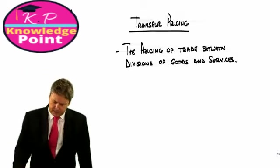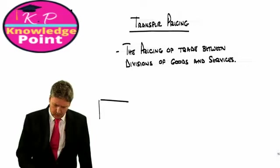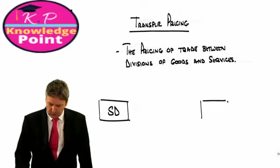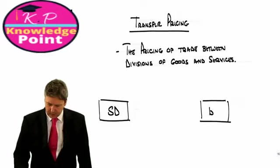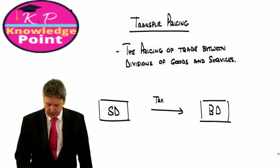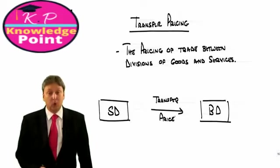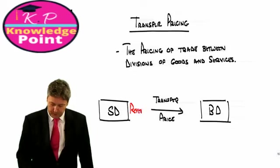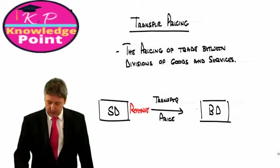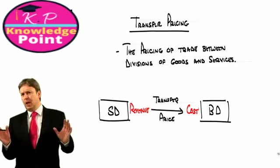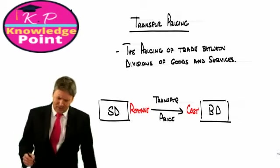If we look at the basic idea, what we have is a supplying division, the one that supplies the goods or service, and we have a buying division. And if we set some sort of transfer price, all we have to remember is this very simple fact: we've got revenue here, and we've got cost here.